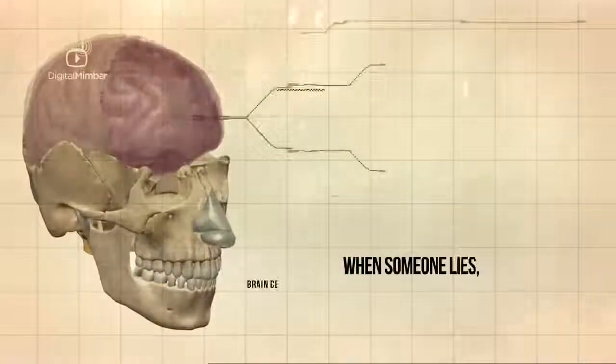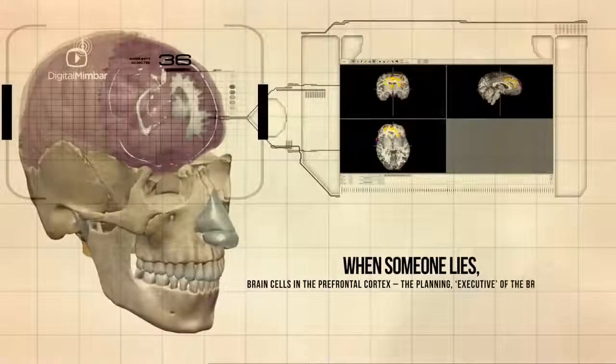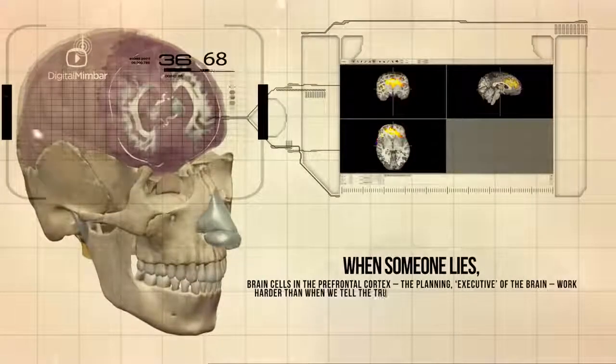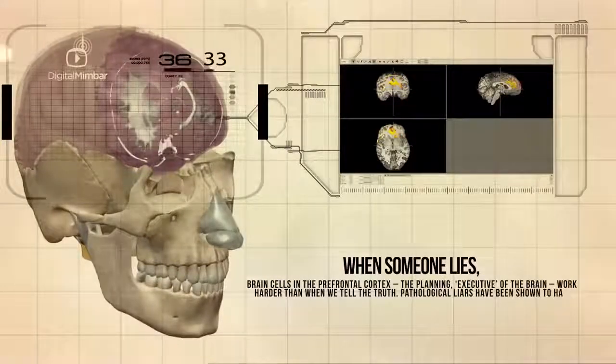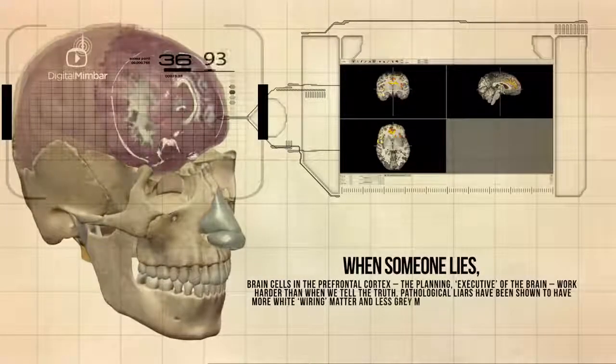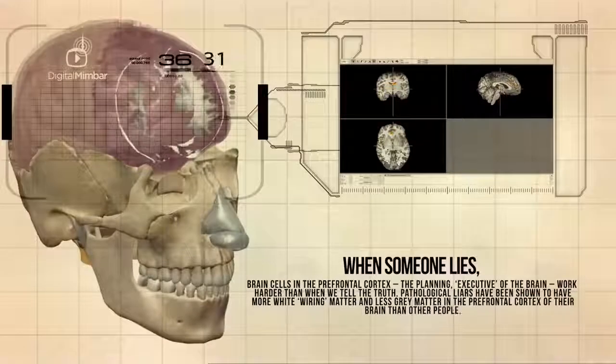When someone lies, brain cells in the prefrontal cortex, the planning executive of the brain, work harder than when we tell the truth. Pathological liars have shown to have more white wiring matter and less grey matter in the prefrontal cortex of the brain than other people.